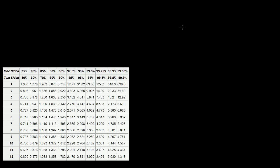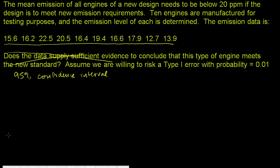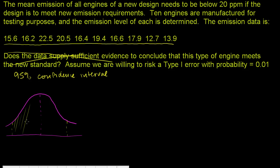We want a 95% confidence interval, so we want to think about the range of t values that 95% of t values will fall under. Let me draw a t-distribution. The t-distribution looks very similar to a normal distribution, but it has fatter tails. This end and this end will be fatter than in a normal distribution. We want to find an interval — this is a normalized t-distribution, so the mean is going to be 0 — and we want to find an interval of t values between some negative value here and some positive value here that contains 95% of the probability.